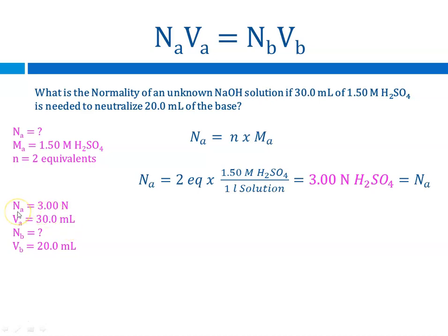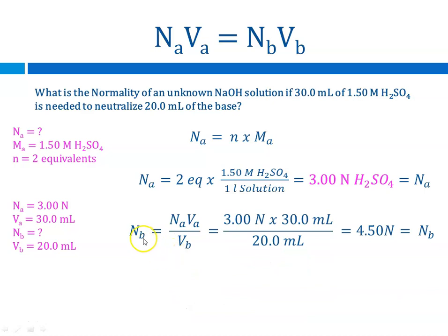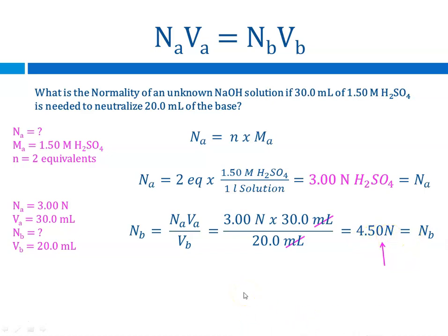Now identifying variables: Na is 3.00 N, Va is 30 mL, Nb is what we're solving for, and Vb is 20 mL. Rearranging NaVa equals NbVb to solve for Nb gives Nb equals Na times Va divided by Vb. Plugging in: 3.00 times 30 mL divided by 20 mL — milliliters cancel — giving 3 sig figs. The normality of the base is 4.50 normal sodium hydroxide.